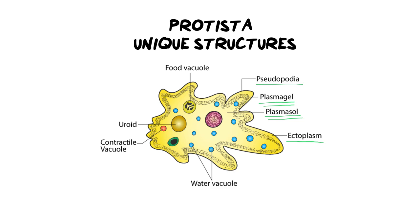We are going to look at how amoeba go from having cytoplasm that's thick like gel to runny like water, how it goes back and forth between those two, and how they use those mechanisms to create pseudopodia or false feet. The other structure you need to be familiar with is the contractile vacuole, which is exclusively used for regulation of water in protists, because the majority of protists are found in water and they need to regulate how much water is coming in and going out.